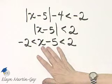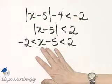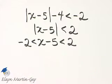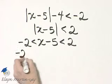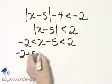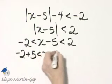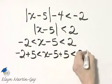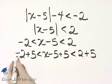We solve by solving for x, or getting x by itself in the middle. So I will add 5 to all 3 parts. So I have the left side, I add 5. The middle, I add 5. And the right side, I add 5. And let's see what we have.